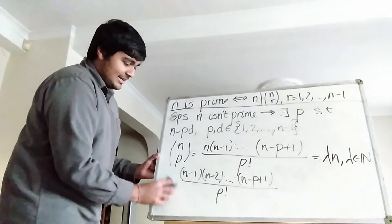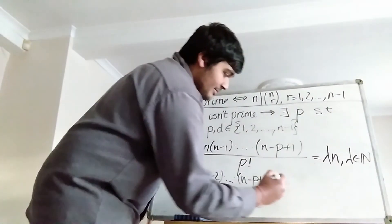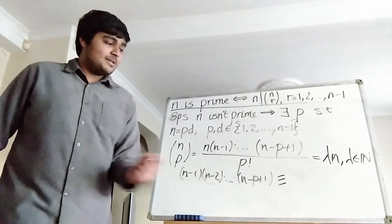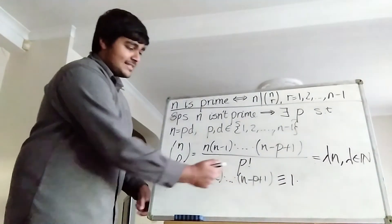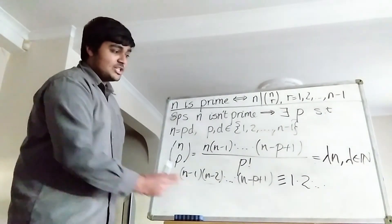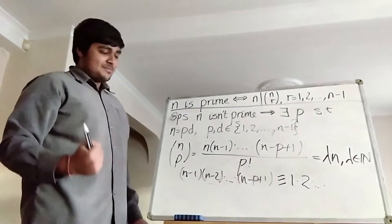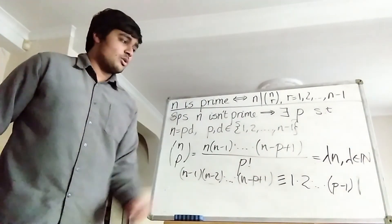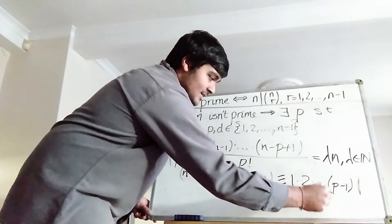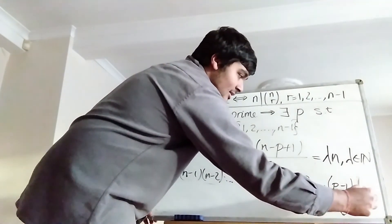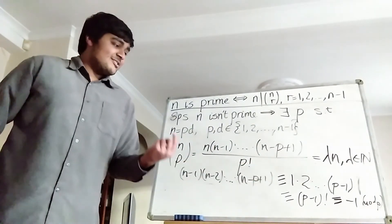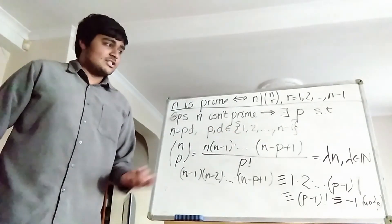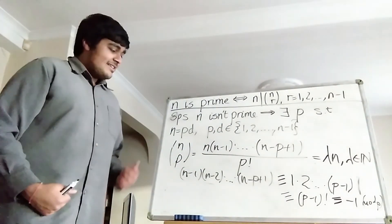Let's look at it mod p and show it's non-zero. This product is congruent to: recall n equals p times d, so n is divisible by p. Certainly n minus p is divisible by p, so n minus p plus 1 is congruent to 1 mod p. The next factor is congruent to 2, and so on, all the way up to p minus 1. So this product is congruent to 1 times 2 times dot dot dot times (p minus 1), which is just (p minus 1) factorial. Wilson's theorem tells us that (p minus 1) factorial is congruent to minus 1 mod p — in particular it's not 0 mod p. So the numerator is not divisible by p, and certainly not by p factorial. So lambda won't be an integer — contradiction. That proves n does not divide n choose p, and thus the AKS primality test is 100% accurate.